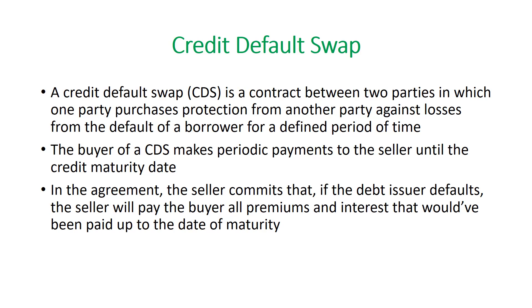In the agreement, the seller commits that if the debt issuer — the company that issued the bonds or debentures — defaults, the seller will pay the buyer all the premium and interest that would have been paid up to the date of maturity. This is paid by the protection seller.